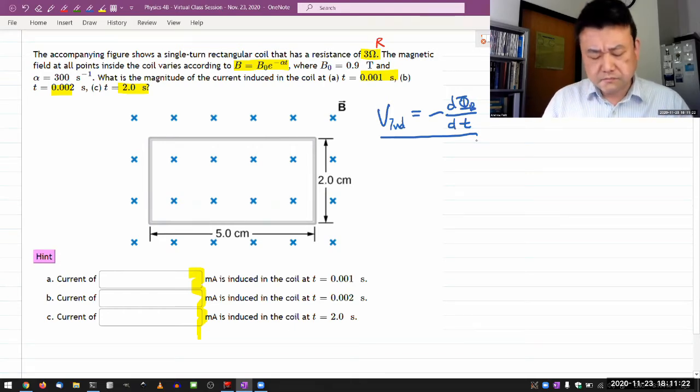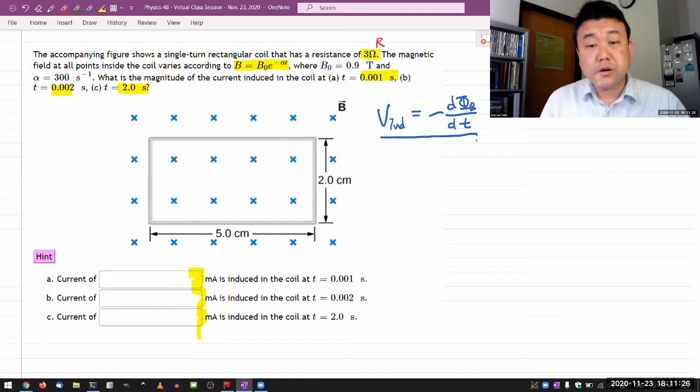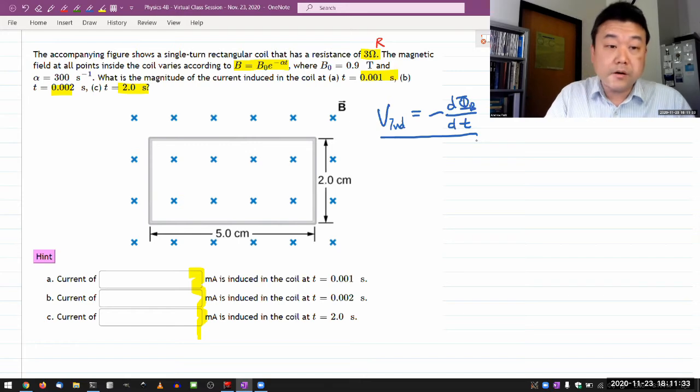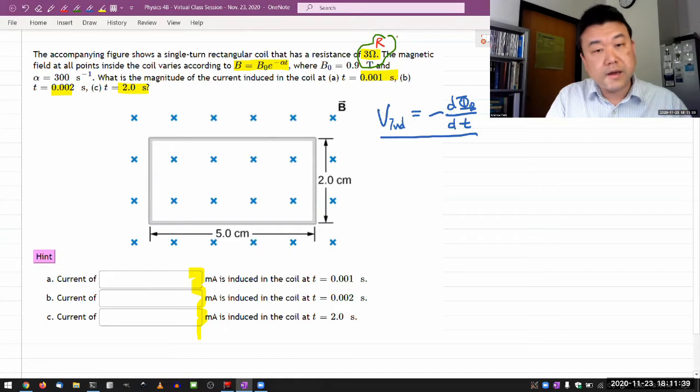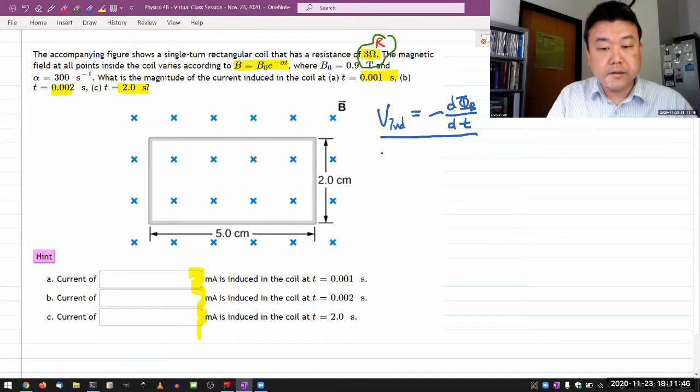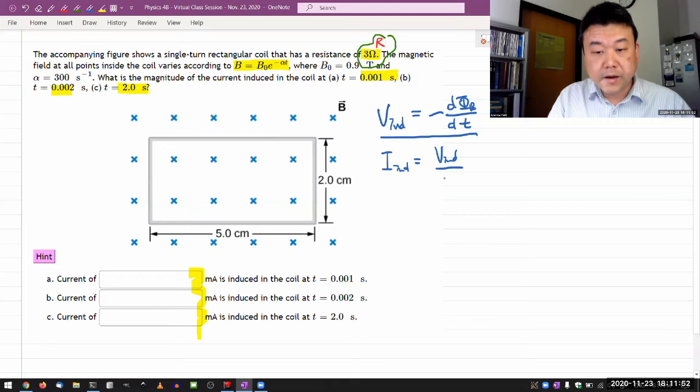This is easy to miss or forget because we talk about induced current so much. Lenz's law even refers directly to induced current. What you have to remember is that whenever you want to get to current, you have to go through the step of Ohm's law. That's why they have to give you the resistance. So after we get the induced voltage, we'll be calculating the induced current using Ohm's law, the voltage divided by the resistance.